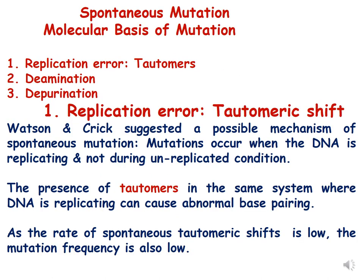Spontaneous mutations are naturally occurring mutations. The molecular mechanism behind spontaneous mutation can happen because of three mechanisms: replication error — which happens because of tautomeric states of bases — deamination, and depurination. Watson and Crick suggested that spontaneous mutations occur when DNA is replicating, not during the unreplicated state. The presence of tautomers during replication can cause abnormal base pairing, and because the rate of spontaneous tautomeric shifts is low, the mutation frequency is also low.